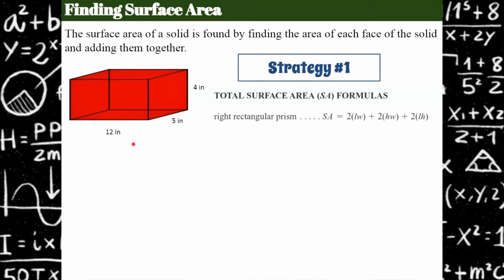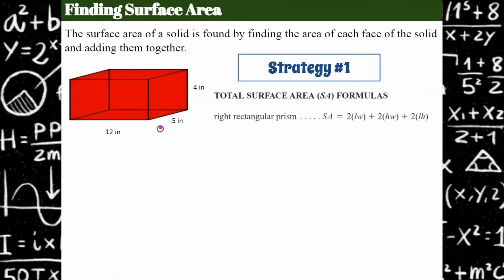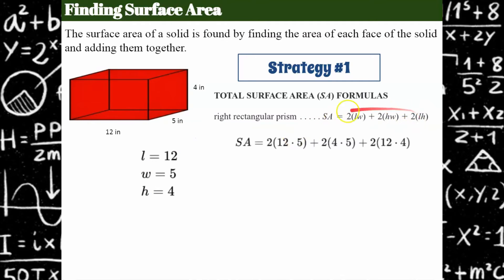Strategy one: on our state test here in Massachusetts, they have a total surface area formula provided on the reference sheet. Check your state's testing — I never ask my students to memorize this. The catch is that the only solid with a surface area formula you can just plug in is a right rectangular prism. Anything else, you have to formulate your own formula. So go to your reference sheet, write down the surface area formula for a rectangular prism, then identify length, width, and height. I could say length is 12, width is 5, and height is 4. You could assign them differently — as long as you represent each dimension, the result is the same. Then take the formula and plug in what you know.